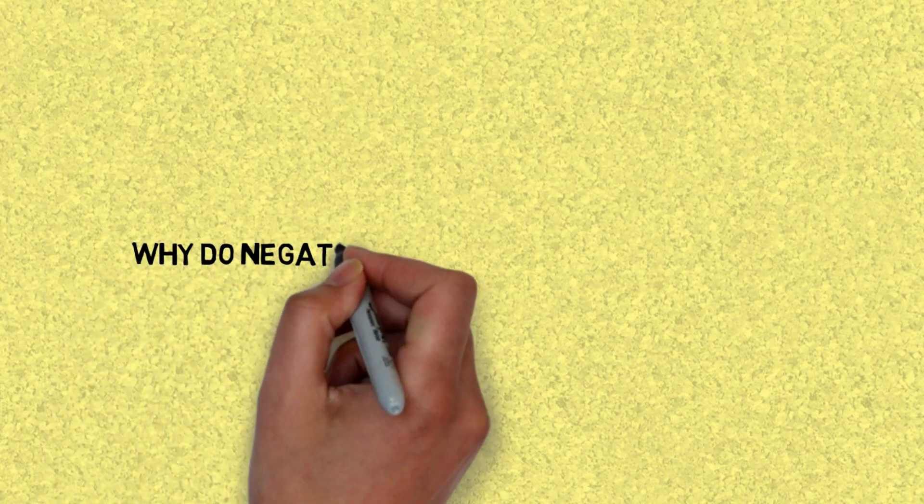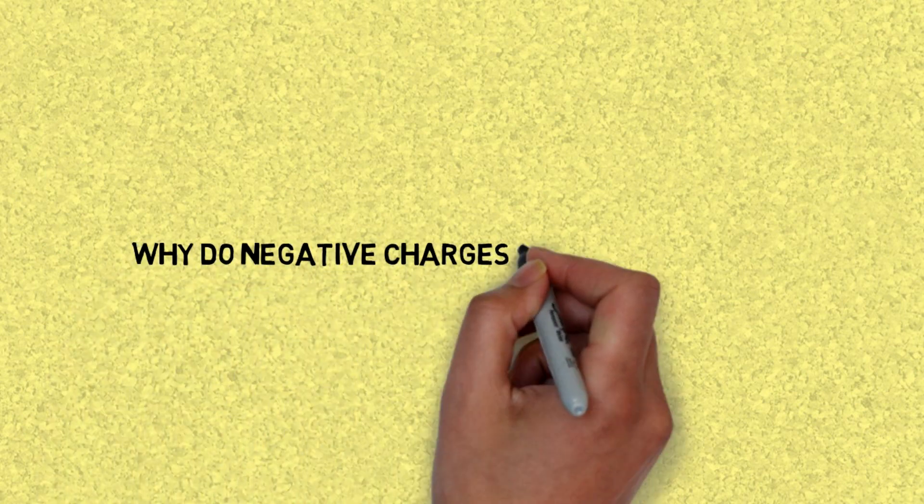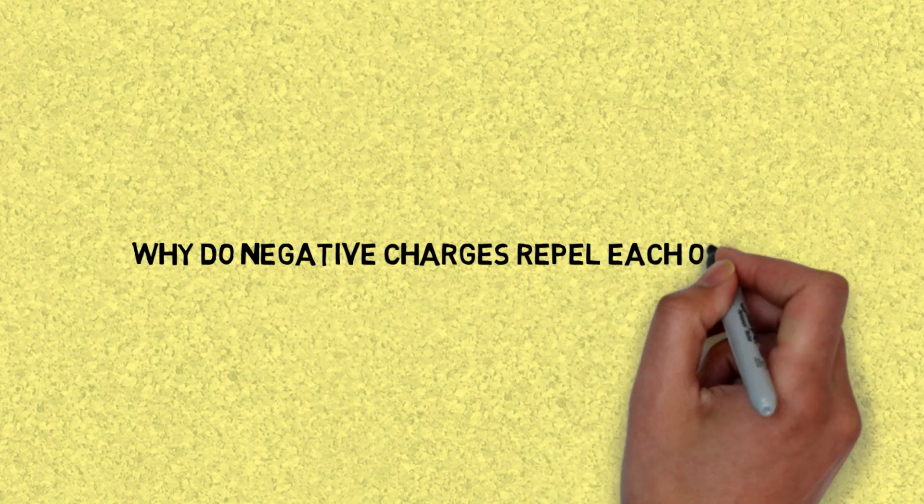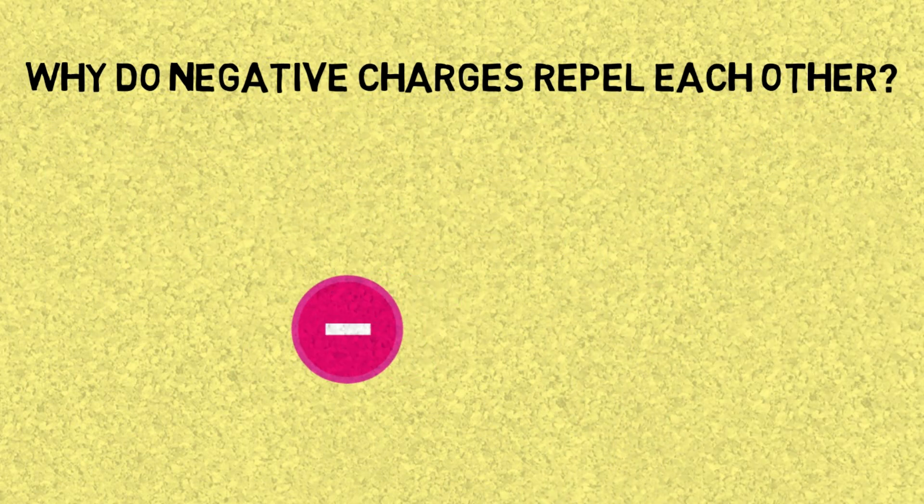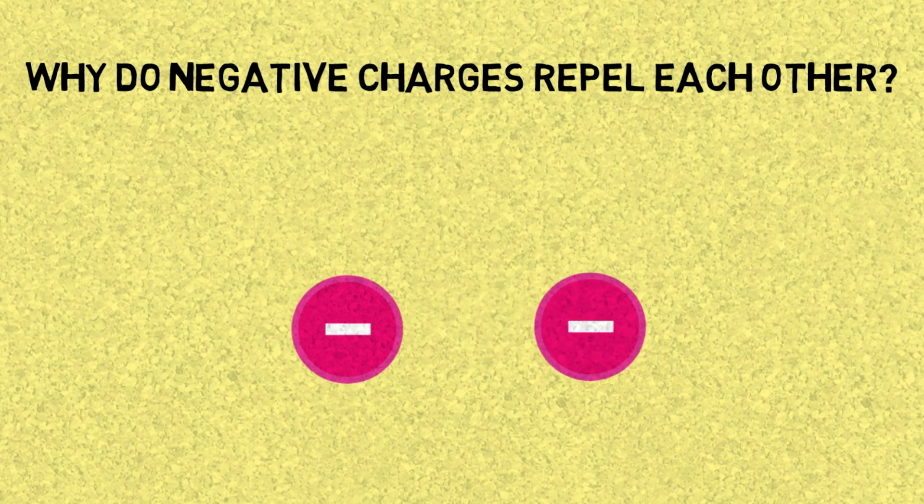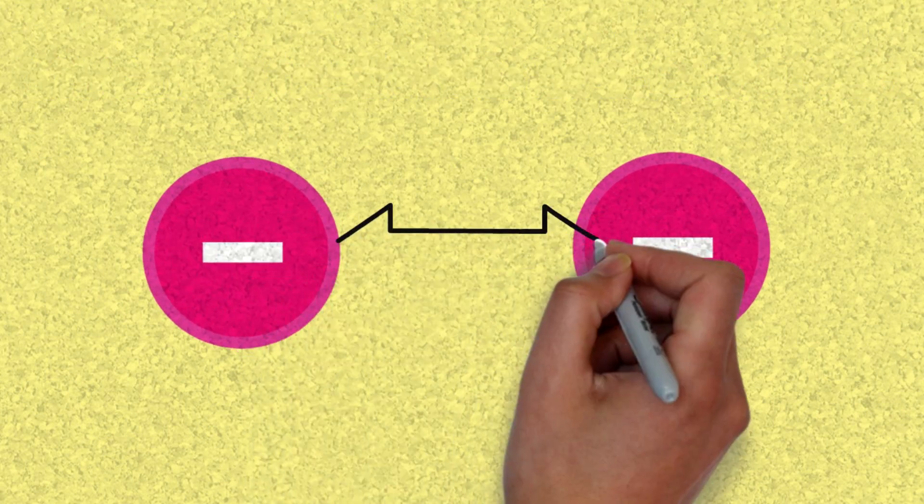In this video, I'm going to explain to you what happens when two negative charges repel each other. The question basically says, when two electrons come close to each other, how does this electron know the other one is there to be able to move away from it?